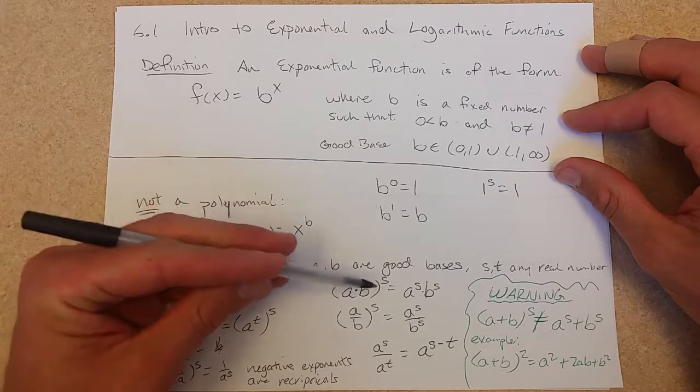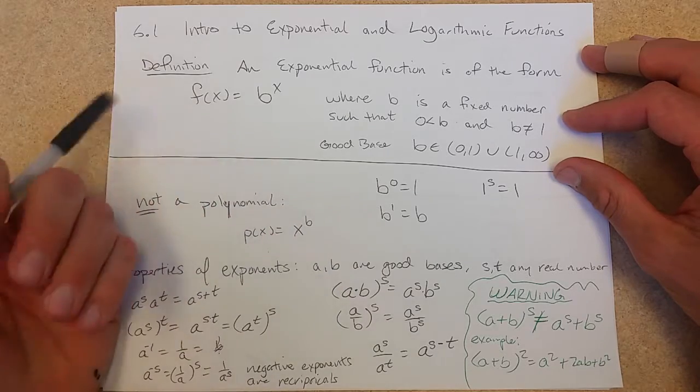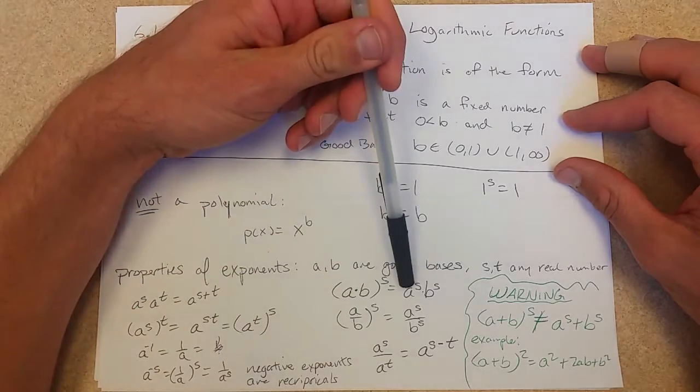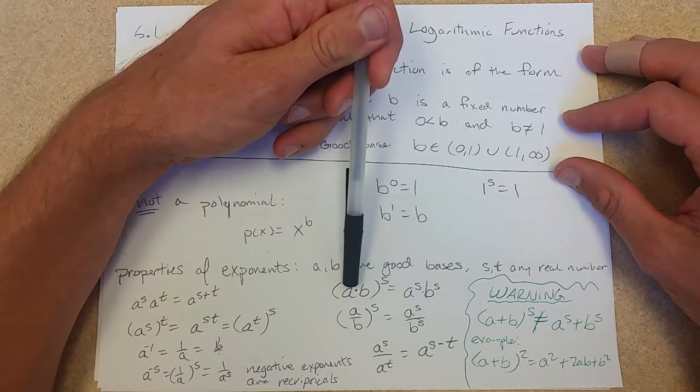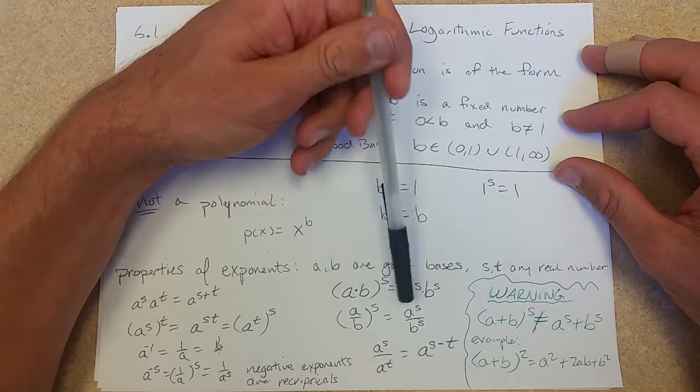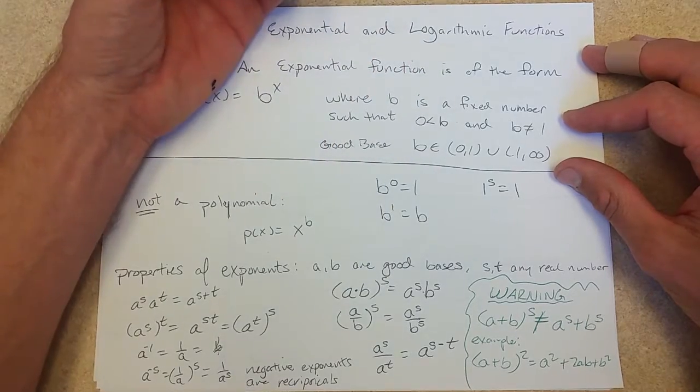You can multiply a times b, raise that to the s power. That is a to the s times b to the s. So I call this distributing the exponent or factoring it out, depending on which way you're going.